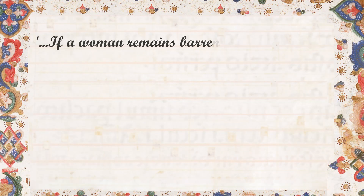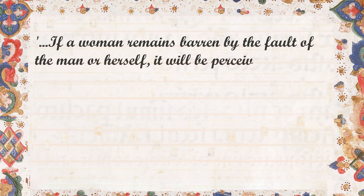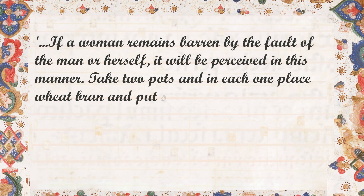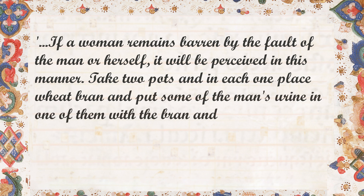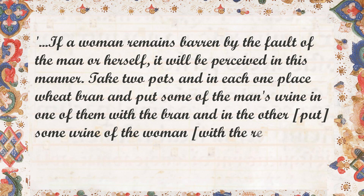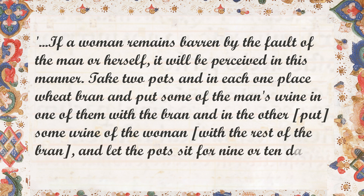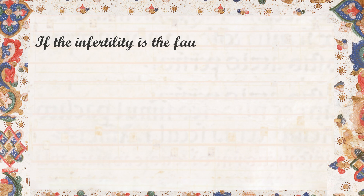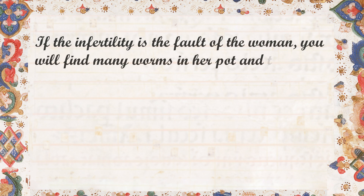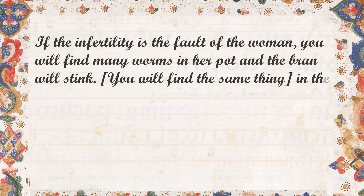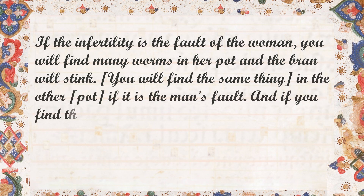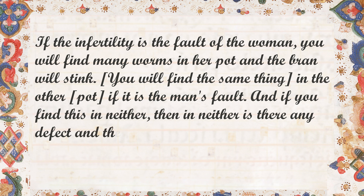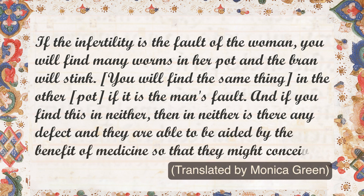In the 12th century compendium of women's medicine, the Trotula, the very same recipe can be found: 'If a woman remains barren by the fault of the man or herself, it will be perceived in this manner. Take two pots and in each one place wheat bran — put some of the man's urine in one, and in the other put some urine of the woman, and let the pot sit for 9 or 10 days. If the infertility is the fault of the woman, you will find many worms in her pot and the bran will stink. You will find the same thing in the other pot if it is the man's fault. And if you find this in neither, then in neither is there any defect and they are able to be aided by the benefit of medicine, so that they might conceive.'